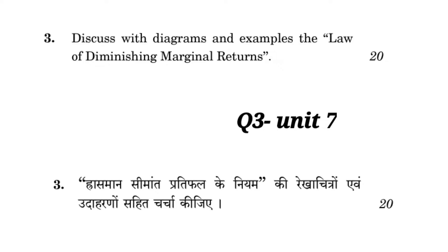Question number three: Discuss with diagrams and examples the law of diminishing marginal returns. Yeh jo law of diminishing marginal returns hai, yeh aapko milega Unit 7 ke andar — Unit number 7 which is Production Function. Uske andar topic milega: The Law of Diminishing Marginal Returns. Jis mein aapko example aur diagrams ke saath is question ko explain karna hai.